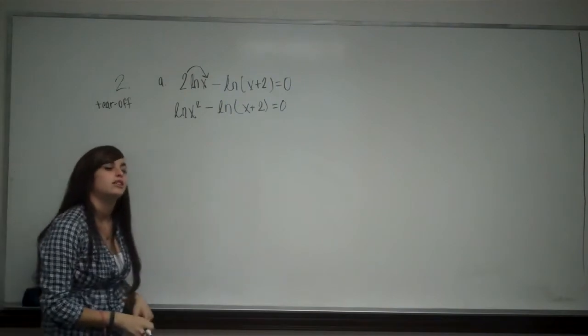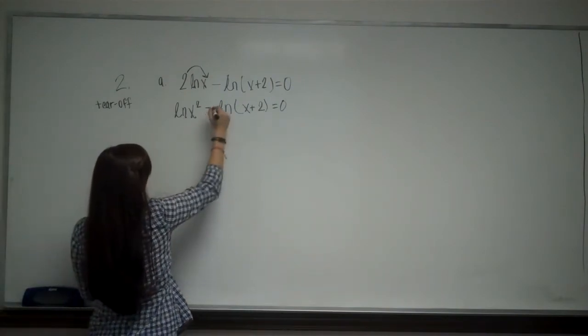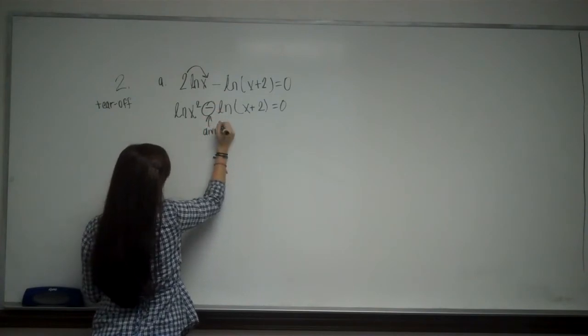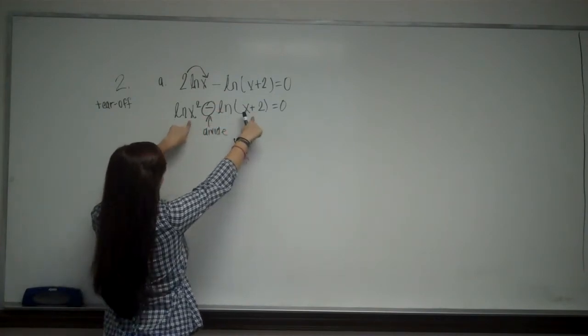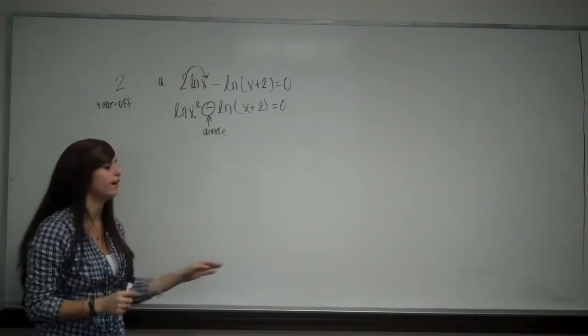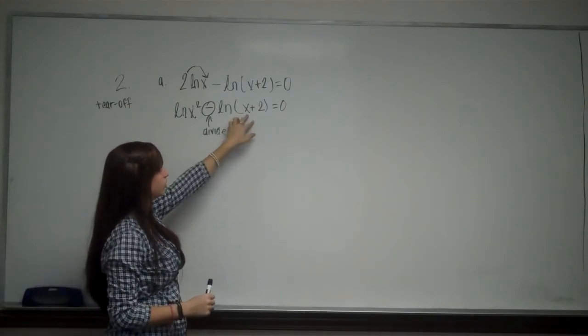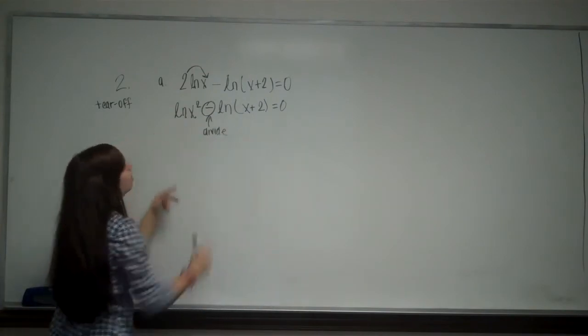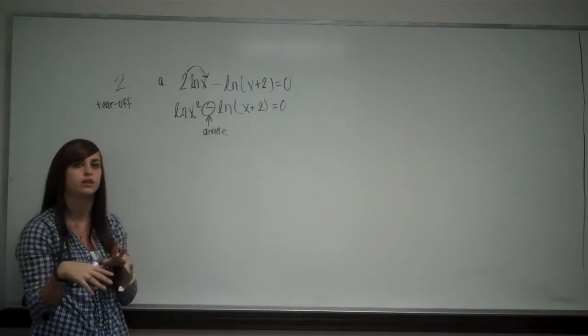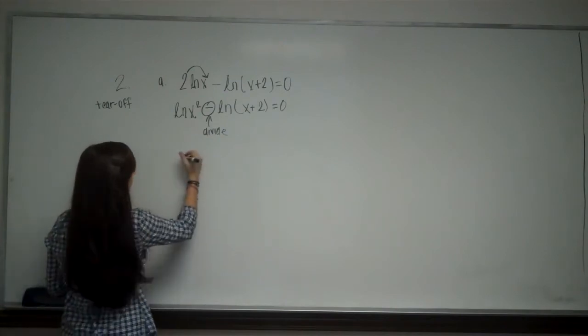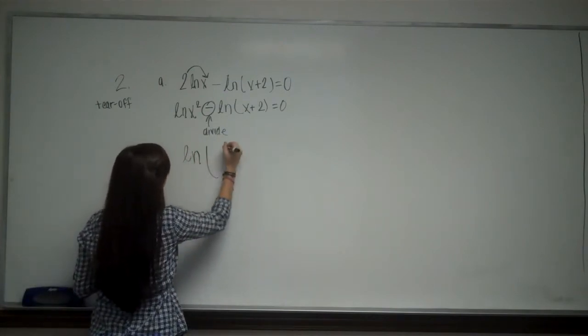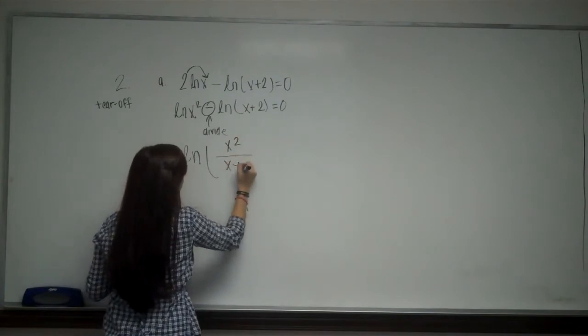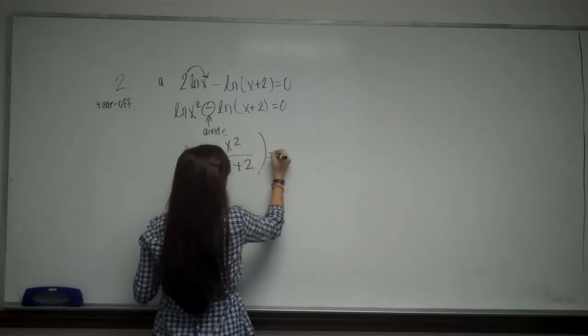Now you should also remember the rule that when I am subtracting, that means that I divide the insides of my natural logs. Now from here, because I am adding, I can't multiply these two because it is inside one natural log. But because I have two natural logs, I can divide them and combine them into one. So I am going to have natural log of x squared, the first one always goes on top, over x plus 2 equals 0.